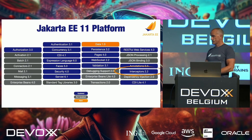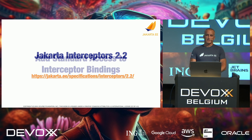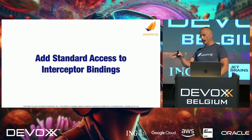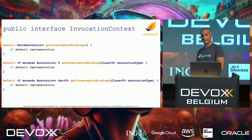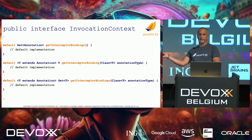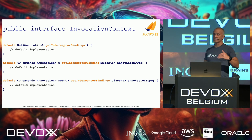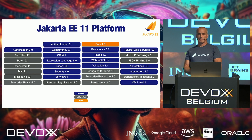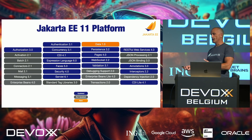Interceptors is a 2.2 release, adding standard access to interceptor bindings. They're adding three methods to the InvocationContext where you can get the interceptor bindings by querying it, along with default implementations for these methods as well.